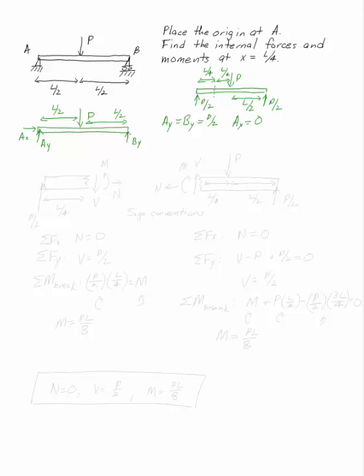Break the beam at that point. So my distance now is L over 4. I still have the P over 2 acting up at this point, but I do not have the P because I have not yet gotten to that spot on my beam.